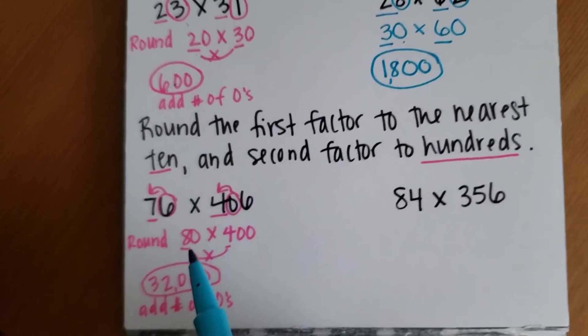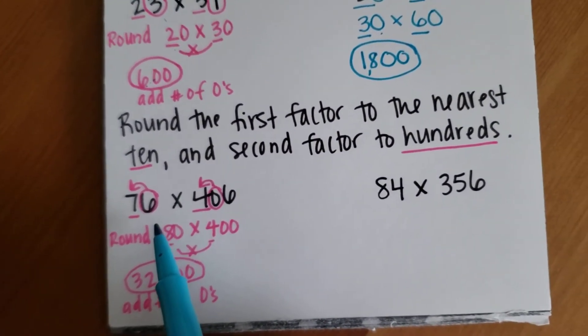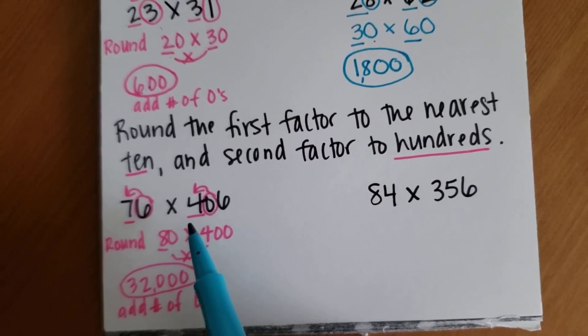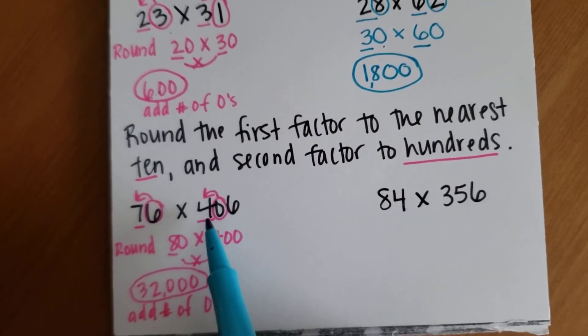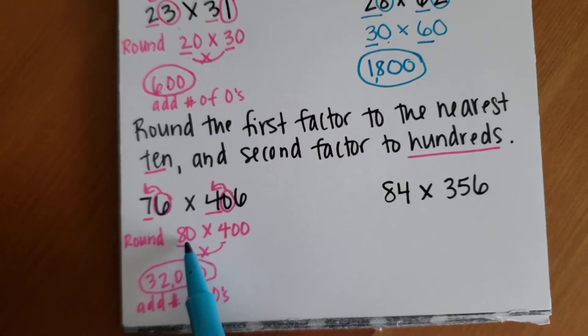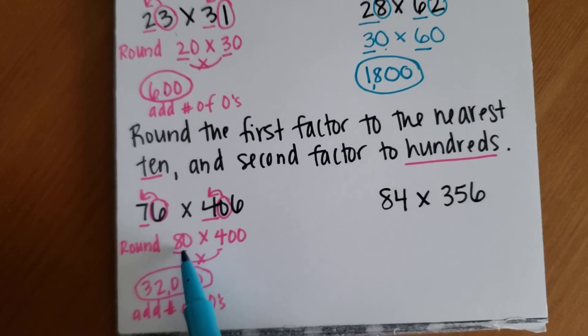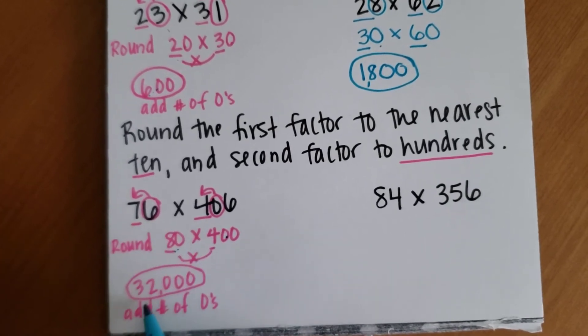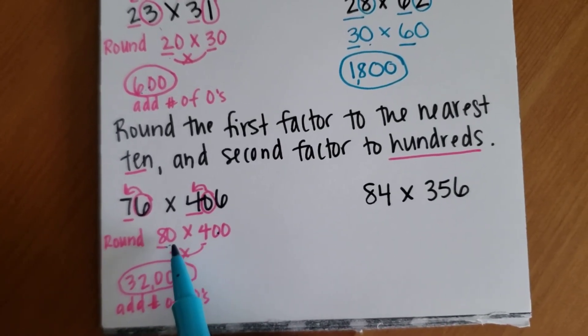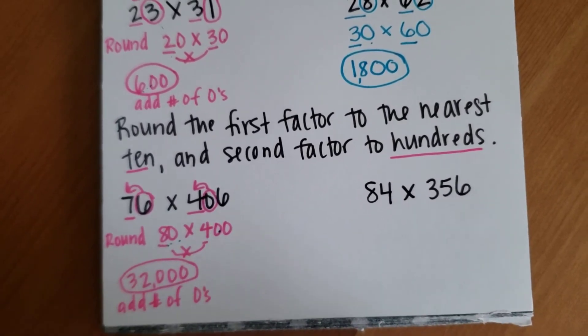On this one we are rounding the first number to the nearest 10 and the second number to the nearest hundreds. So I underline my 10 spot and my 100 spot. 76 would round to 80, 406 would round to 400. I multiply those front numbers again. 8 times 4 equals 32. And I add how many zeros there are. 1, 2, 3. There are 3 zeros.